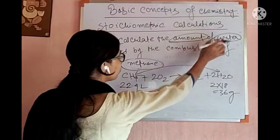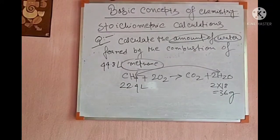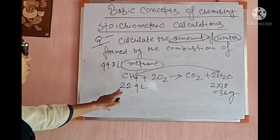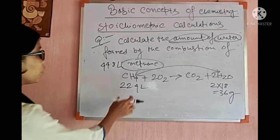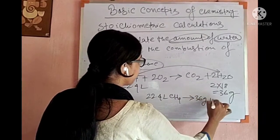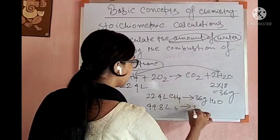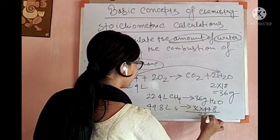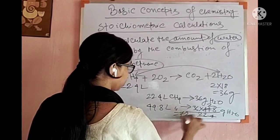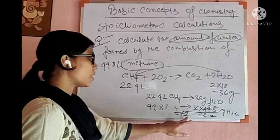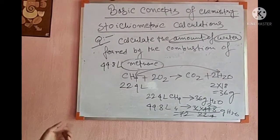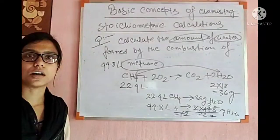When the amount of water is asked, write it in terms of grams unless another unit is specified. So 22.4 liters of methane gives 36 grams of water. Therefore 44.8 liters of methane gives 36 × (44.8 / 22.4) = 36 × 2 = 72 grams of water. You solve these numericals by identifying the stoichiometry method based on the units given in the question. In the next class, we will start the molarity and molarity concept.